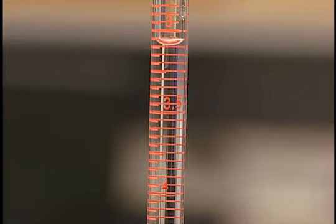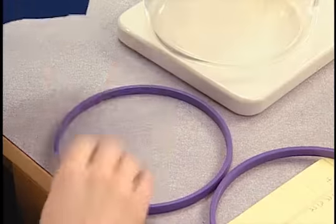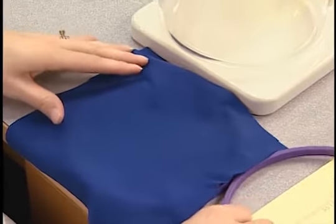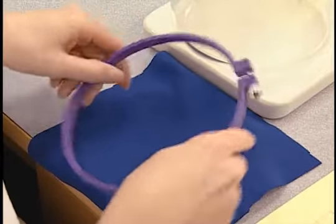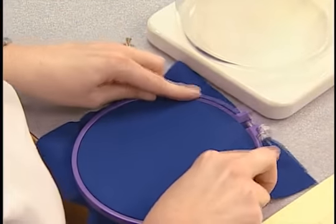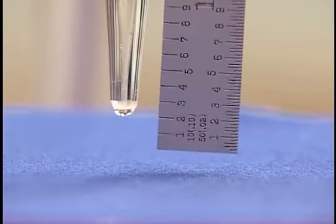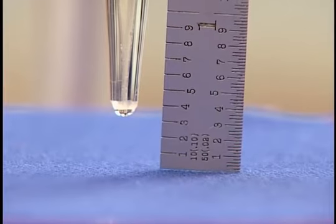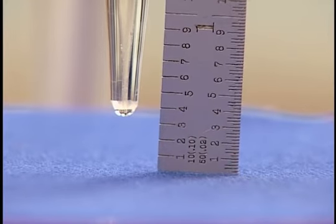A burette, which can be adjusted to deliver 15 to 25 drops of water per milliliter, is set up on a stand. A fabric specimen is mounted in a 152-millimeter embroidery hoop so that the surface of the fabric is taut. Then the mounted specimen is positioned 0.38 inch below the tip of the burette.